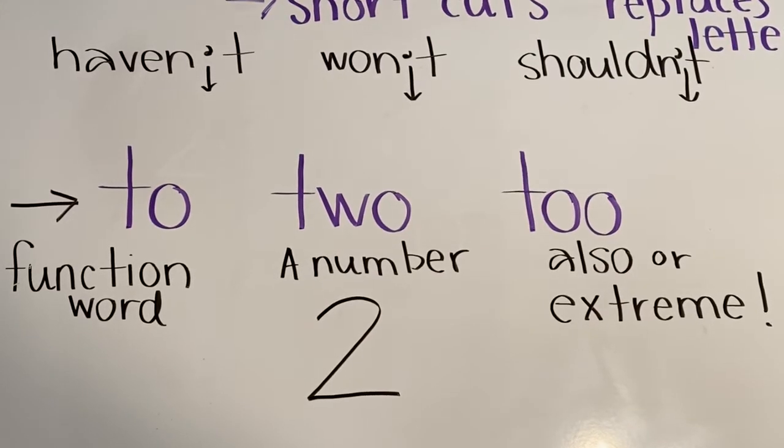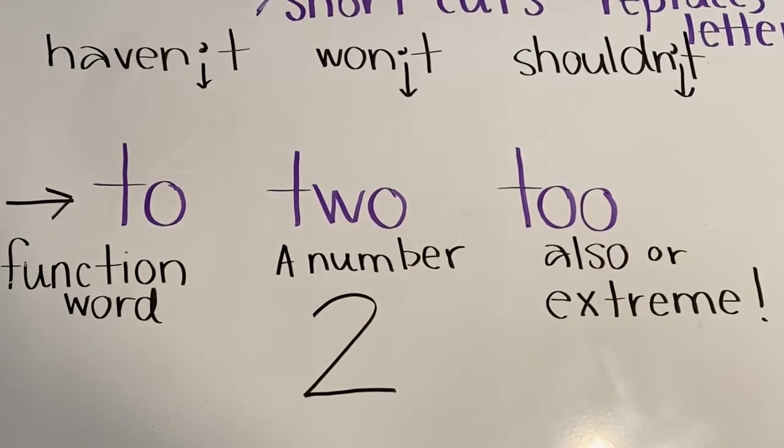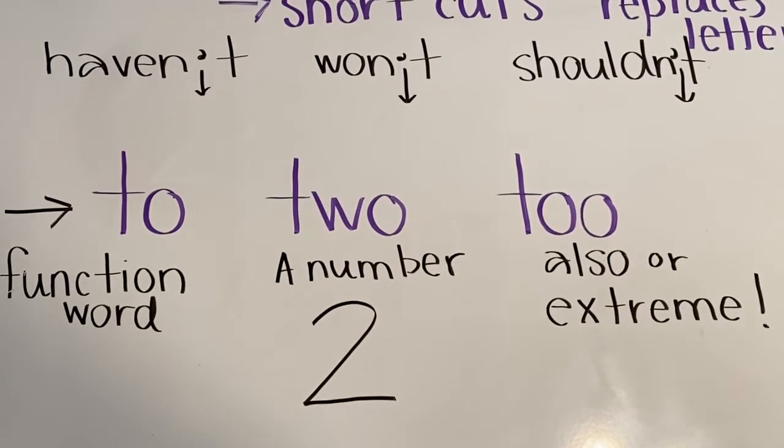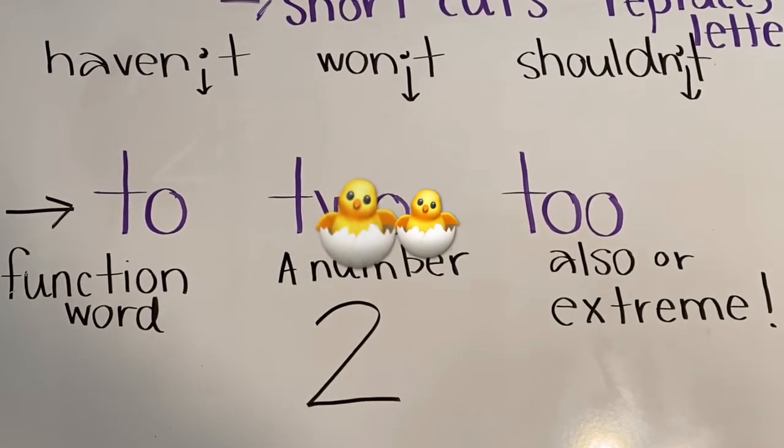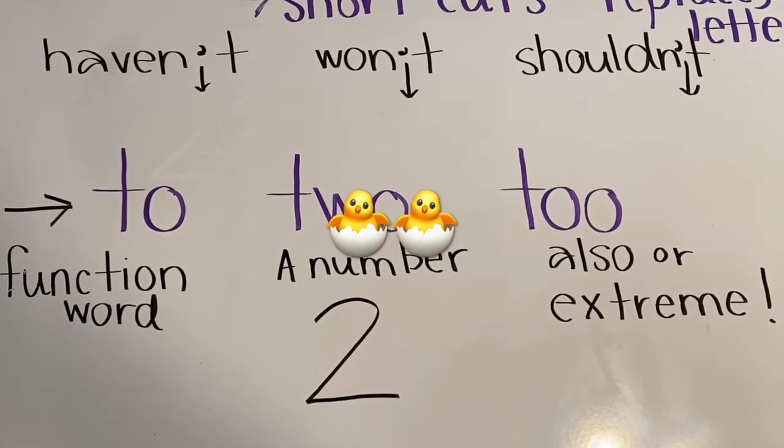The second word is the number two. We would use it in a sentence like this. Each child got two giant Easter eggs in their basket.